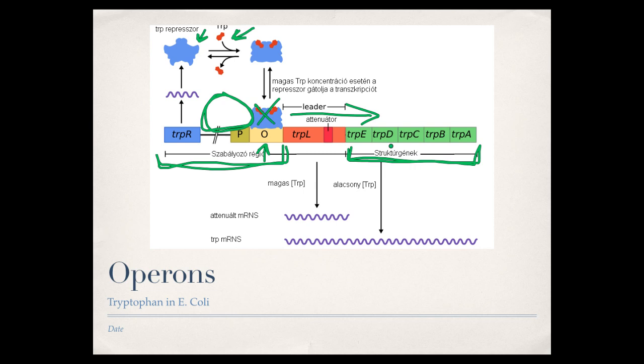But when tryptophan is around, the E. coli doesn't want to waste the energy making that tryptophan. So the tryptophan binds to our repressor, which causes it to turn into this active form that can shut down this pathway, shuts down the pathway, and it doesn't work anymore.